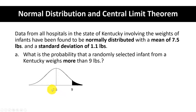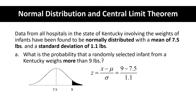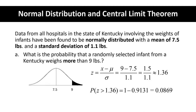If we draw a picture, the mean is 7.5, it is bell-shaped, and our x is nine. This is area to the right because it weighs more than nine pounds. Using our z-score formula we take nine minus 7.5 then divide by 1.1. Subtracting first before we divide we get 1.5 divided by 1.1, and with z-scores we always round to two decimal places, giving us a z-score of 1.36.